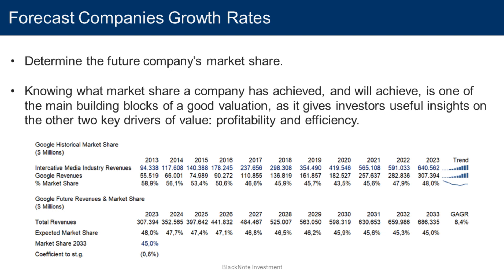Once you have projected the industry revenues, the next step is to determine the market share of overall industry revenues that the company you are valuing will achieve. We start by assessing the current market share of our company by dividing the current company revenues by the current industry total revenues. This shows where the company has positioned itself among all other players in the industry. Knowing a company's market share gives investors useful insights on the two other key drivers of value: profitability and efficiency. Observing how market share has changed over the years also allows investors to refine their assumptions about the company's future.